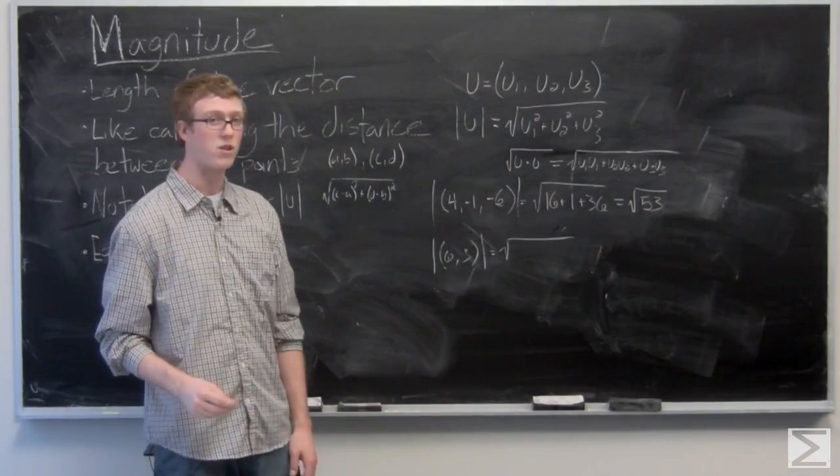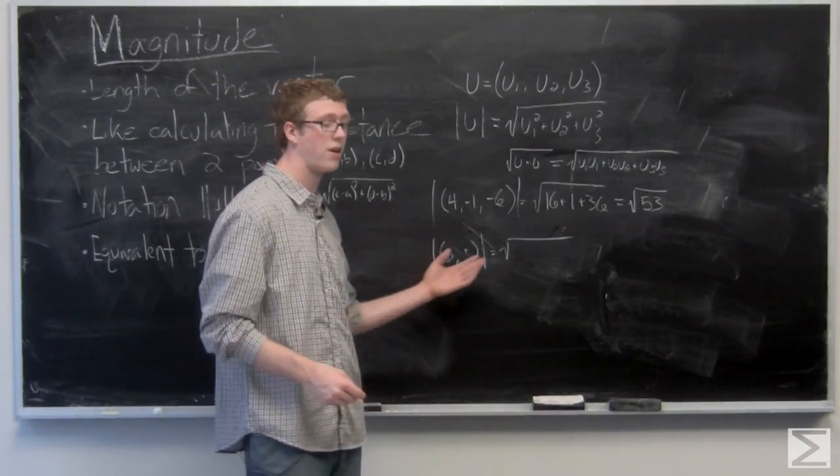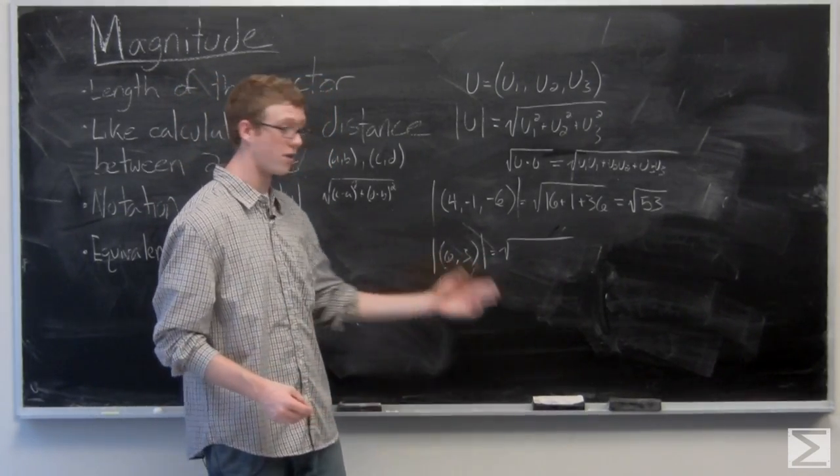So the magnitude of vector is 6, 3. 6 squared plus 3 squared is going to be 36 plus 9.